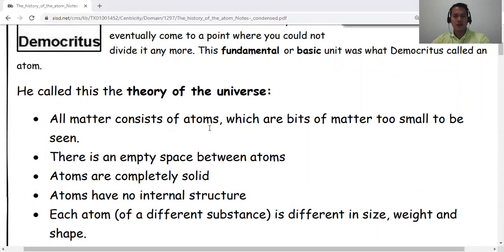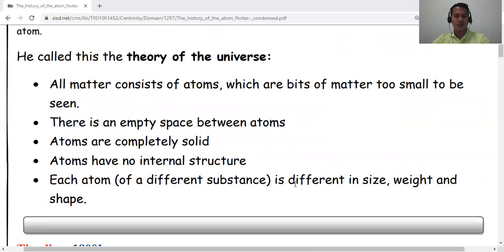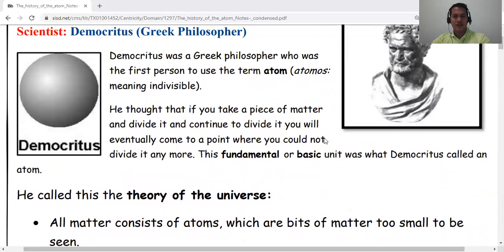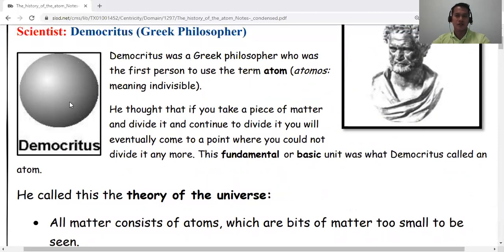He said all matter consists of atoms, which are bits of matter too small to be seen. There is an empty space between them. Although they are solid, they have no internal structure, and each atom is different in size, weight and shape. He reasoned out everything about atoms. His model looked like a marble or a billiard ball.